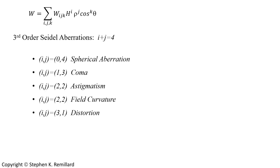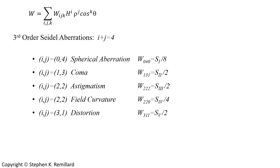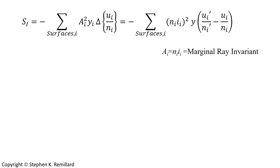The W coefficients we're calculating are related to the Seidel coefficients. The Seidel coefficients go by the names S sub 1 through S sub 5: S sub 1 for spherical aberration, S sub 2 for coma, S sub 3 for astigmatism, S sub 4 for field curvature, and S sub 5 for distortion.